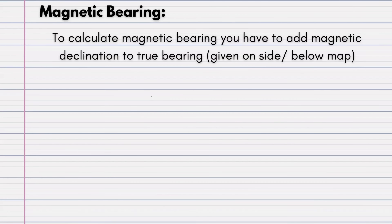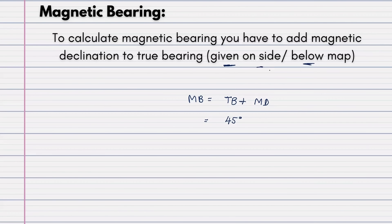For magnetic bearing, it is extremely simple. All you have to do is add your true bearing and your magnetic declination. The formula is: magnetic bearing = true bearing + magnetic declination. From our previous question the true bearing was 45 degrees, and the magnetic declination we calculated was 21 degrees 18 minutes. Adding the two gives us a magnetic bearing of 66 degrees 18 minutes.